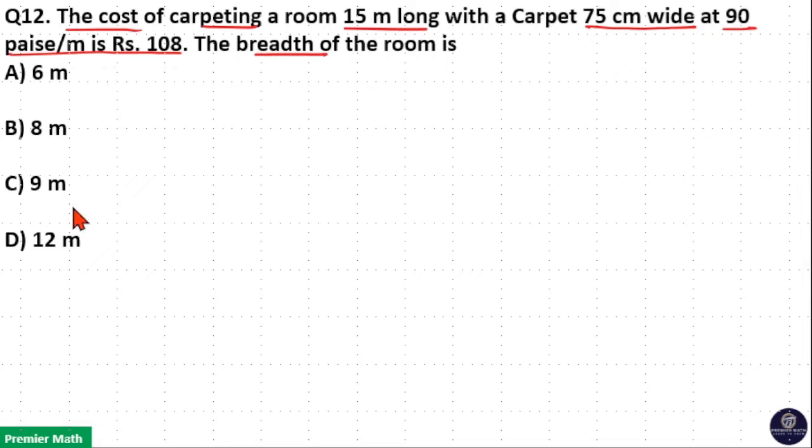When you buy an unstitched cloth material, you are buying it in terms of length. Here, this line indicates the length of carpet. For 1 meter length, 90 paise is the cost.